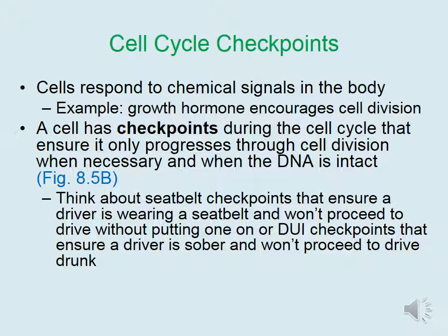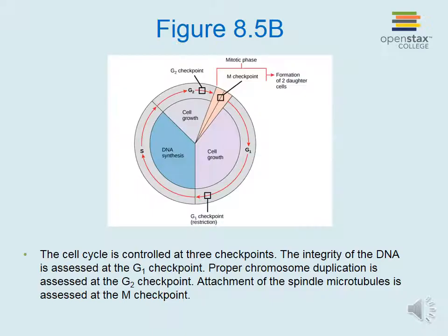A cell also has checkpoints during the cell cycle that ensure it only progresses through cell division when necessary and when the DNA is intact. Think of these as similar to seat belt checkpoints or DUI checkpoints — a police officer ensures a driver meets the requirement and won't proceed otherwise. A cell checkpoint ensures a cell only divides when necessary and won't divide if the DNA is damaged. The cell cycle is controlled at three checkpoints: DNA integrity is assessed at the G1 checkpoint, proper chromosome duplication at the G2 checkpoint, and attachment of spindle microtubules at the M checkpoint.